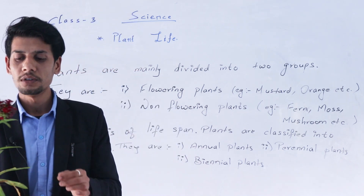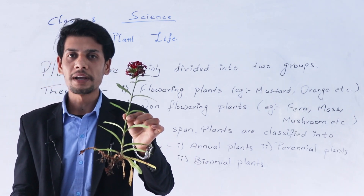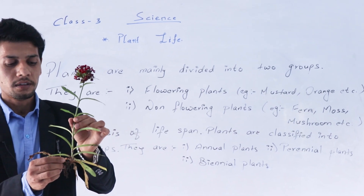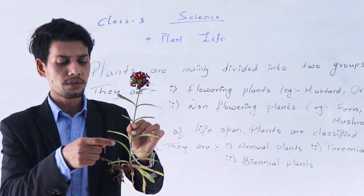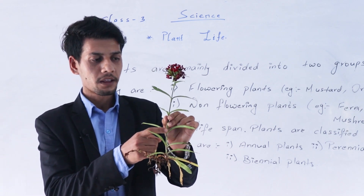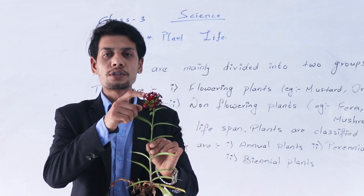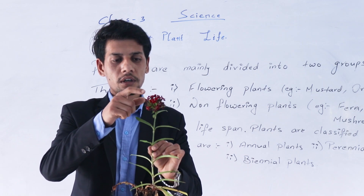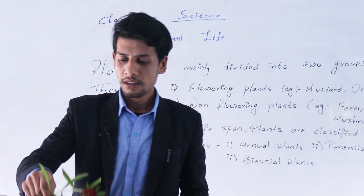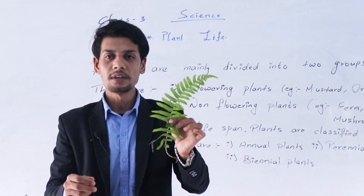I have a plant for you. You can see here — there are different parts of plants. You can see the roots. The roots of the plant are visible here. This is a flowering plant. Similarly, I have another plant — this is a non-flowering plant.